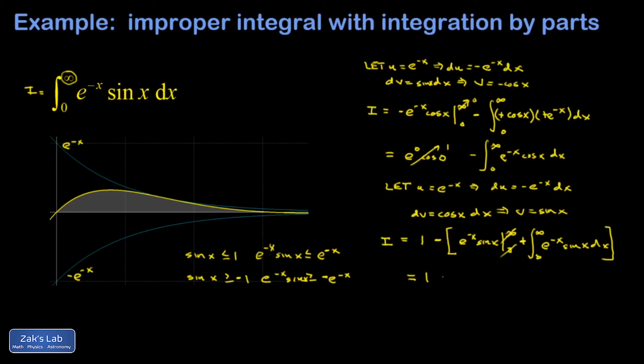And I end up with 1 minus the integral from 0 to ∞ of e^(-x) sin x dx, which I then recognize as another copy of the integral I.